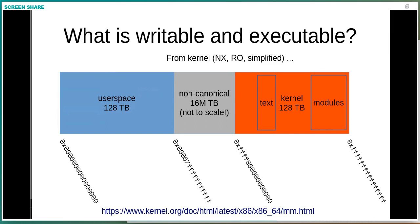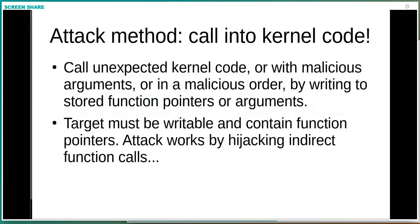But that left user space — you could dump your code into user space and run it from the kernel. With that separation, suddenly you couldn't write and execute from anywhere anymore. But this opens the door to the current attack method: call into kernel code. The kernel has all the functions you want as an attacker, so those are the ones you go after. You can write to stored function pointers on the heap or on the stack, manipulate what's going to be called and in what order, and just hijack indirect function calls.